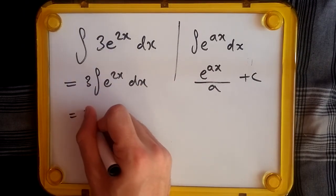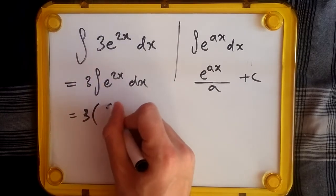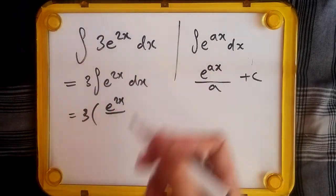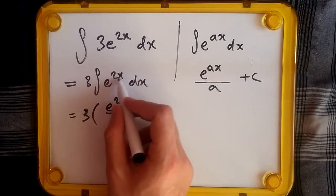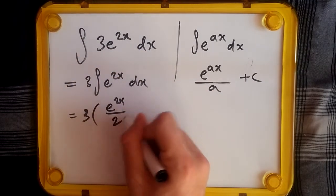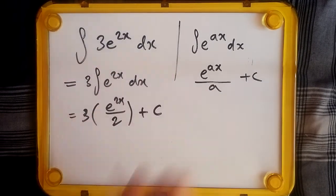What do we have? Well, we have e^2x, and then we just differentiate the top. So 2x, the derivative of 2x is 2, so divide this over 2, of course plus c. And that's it.